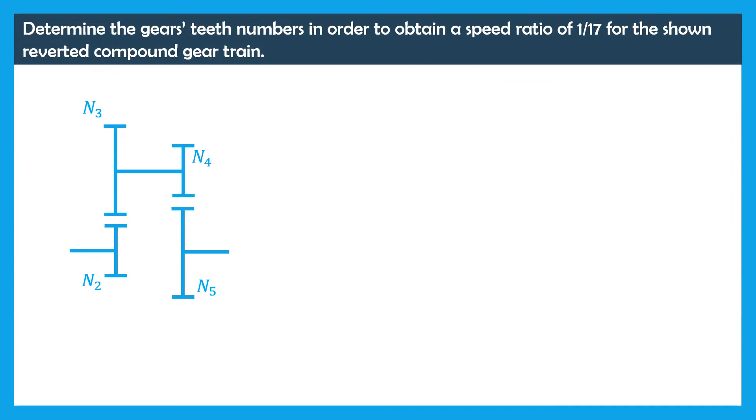Thus, the numbers of the gears should satisfy N2N4 over N3N5 is equal to 1 over 17, and N2 plus N3 is equal to N4 plus N5.